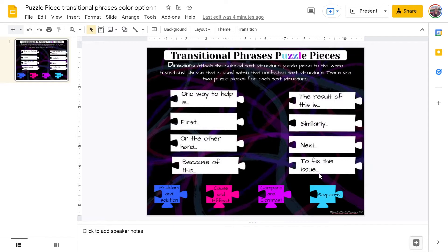I'm going to show you how this works, and we're going to start from the left side going down, and then I'll move to the right column and go down. Students can put these puzzle pieces on either side, it doesn't really matter. I'm going to do it uniformly and just put them all on the left side. You might have students that want it very uniform, and you'll have some students that will put some on the left, some on the right. It does not matter as long as it connects to the puzzle piece. The directions say attach the colored text structure puzzle pieces to the transitional phrase that is used within that nonfiction text structure. There are two puzzle pieces for each text structure.